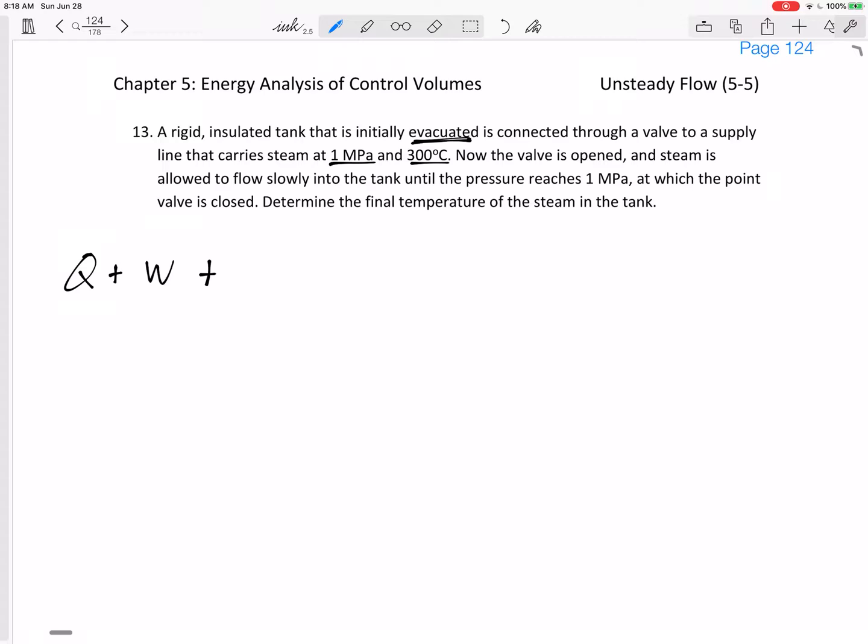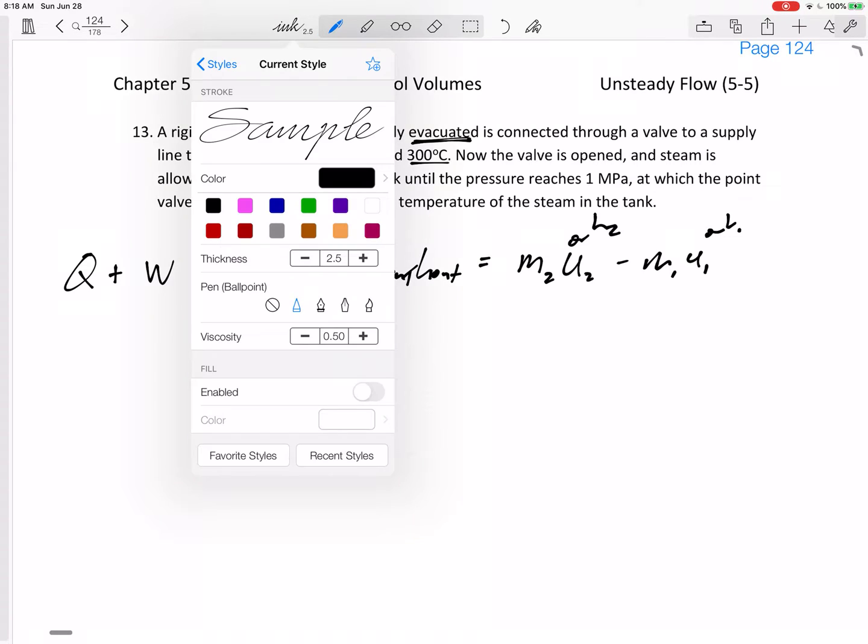Any Q, any heat transfer, plus any work that's crossing a boundary, plus any M_in H_in minus M_out H_out equals M2. Should I put U here or should I put H here? I'm going to put U minus M1 U1. This might be H, I just put U just to start. So first of all, should this be U or should this be H?